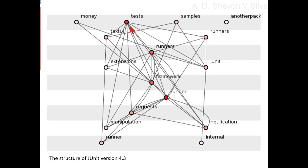A good test of the structure is the ease with which one can point to any element and identify other elements it depends on, directly and transitively. Though there are many tests, many test dependencies are readily traceable.